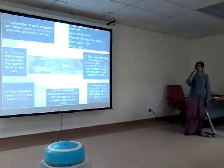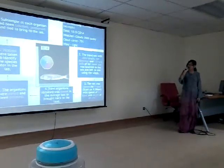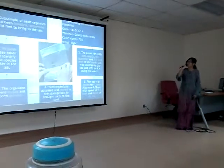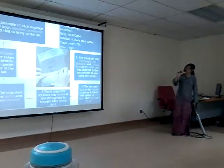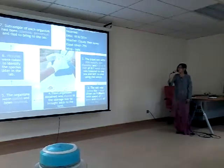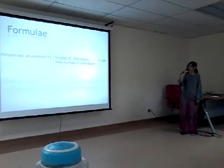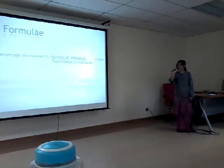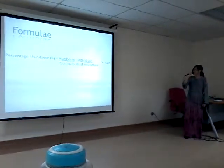The organisms were sorted and counted. Pictures were taken to identify the species later in the lab. Subsamples of each organism were labelled, preserved, and brought back to the lab. We used one formula: percentage abundance equals number of individuals divided by total number of individuals, multiplied by 100%.